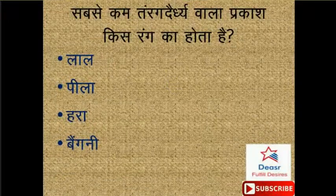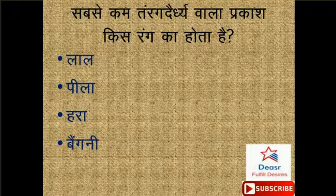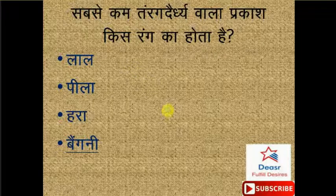Sabse kam tarang dhairya wala prakaash kis rang ka hota hai? Options: lal, pila, hara, baingni. Doston, iska sahih jawab hai option number D - baingni. Aur sabse adhik tarang dhairya hoti hai lal rang ki.